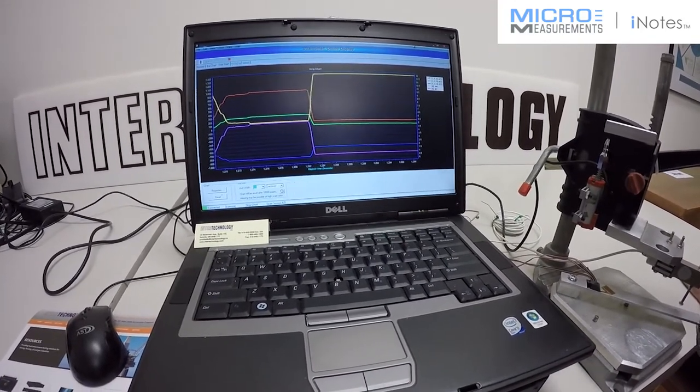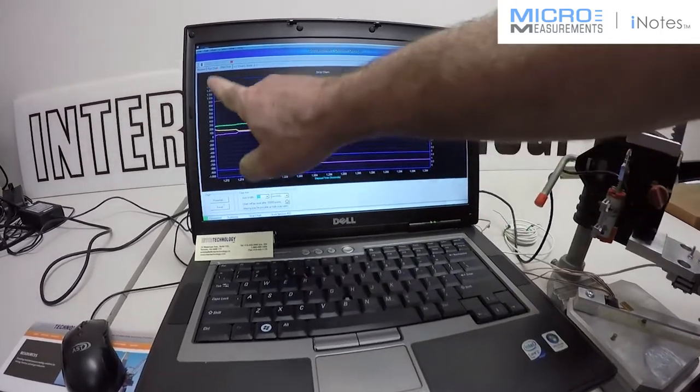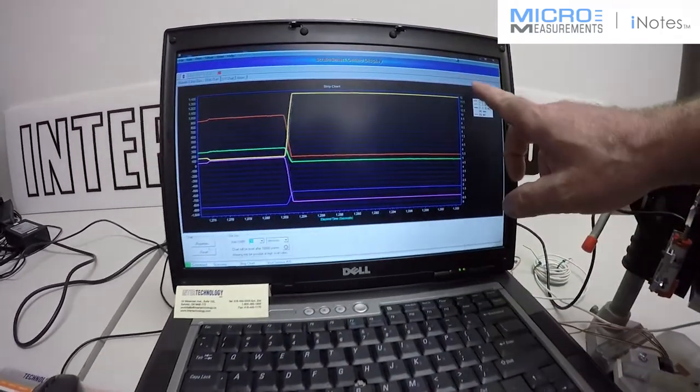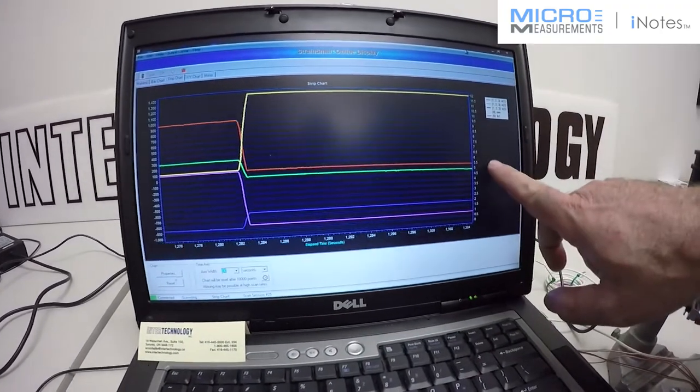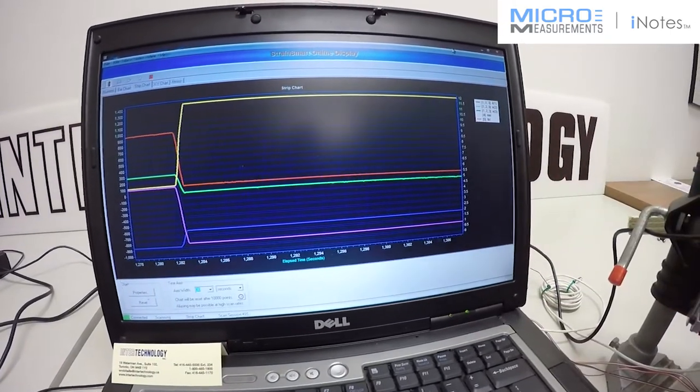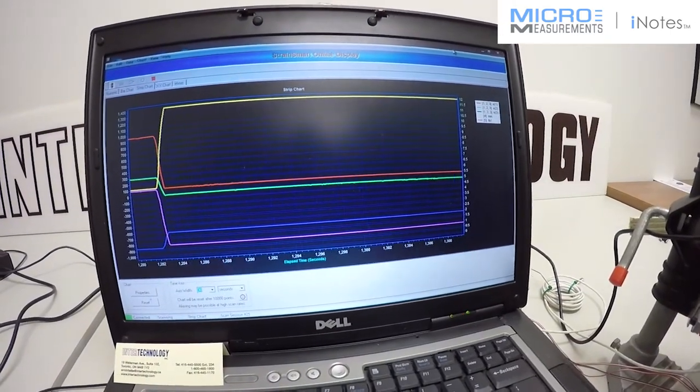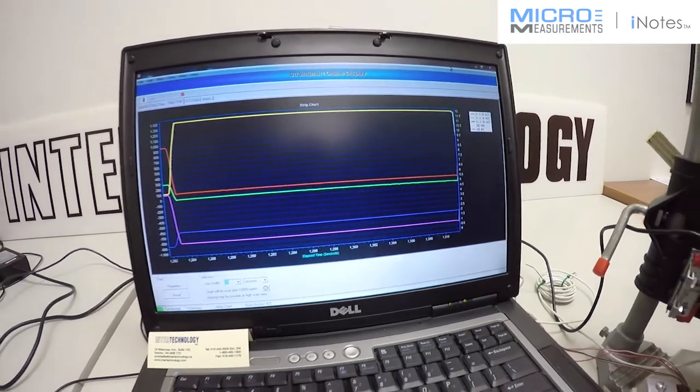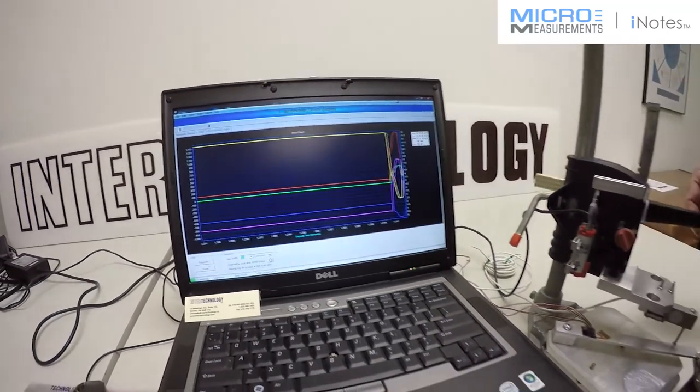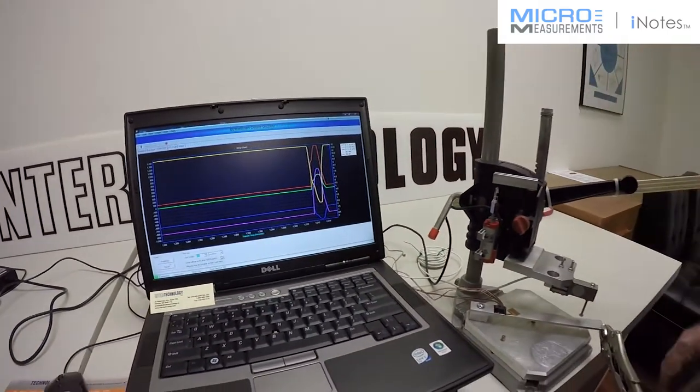You'll note on the screen we've got strain data on our left-side axis. In this case, the displacement sensor is currently on the right-side axis, and then our time base on the bottom. So it's a great demonstration tool that allows you to show people what a strain gauge can do.